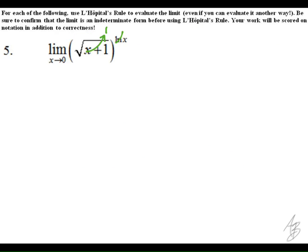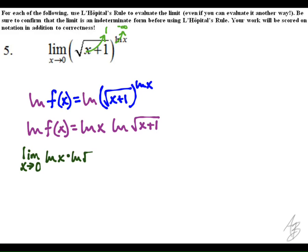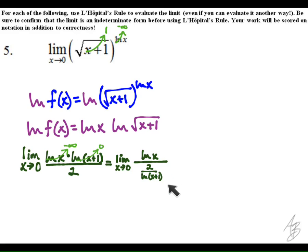In problem number five, we get the indeterminate form one to the negative infinity power. So again, we're going to rewrite this and use the natural log along with our rules for natural logs. The natural log of a square root — since this is x plus one to the one-half — we can bring the one-half out front. We get the indeterminate form negative infinity times zero, so we rewrite it as a quotient, and in this case we get the indeterminate form infinity over infinity.